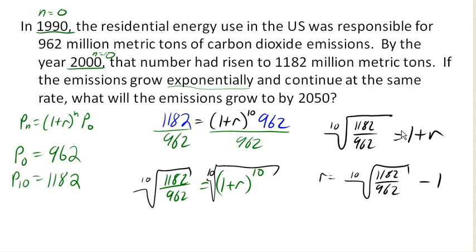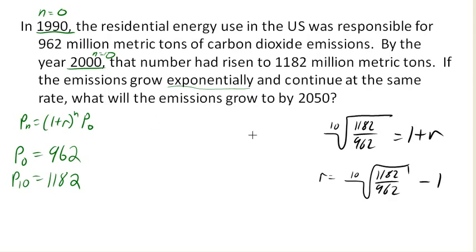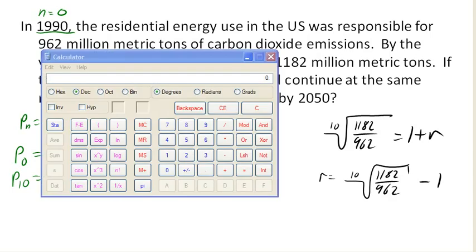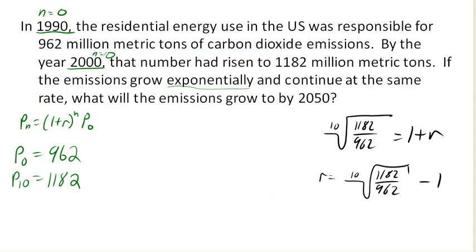So now I need to calculate out what this 10th root of 1182 over 962 is, and so that means I'm going to need my calculator. So let me go grab my calculator. Now unfortunately, my calculator does not have a 10th root button, and so in order to evaluate this, I'm going to need to use some algebra trickery. Using some algebra, I can remember that to find a 10th root, finding a 10th root is the same as finding a power of 1 10th.